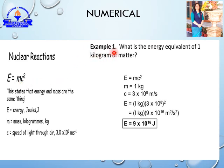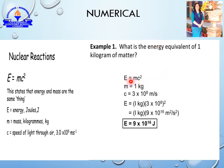The question is: what is the energy equivalent to 1 kilogram of matter? Mass is given as 1 kilogram. You need to find out the energy which is equivalent to 1 kilogram of matter. According to the formula E = mc², you need to find energy.